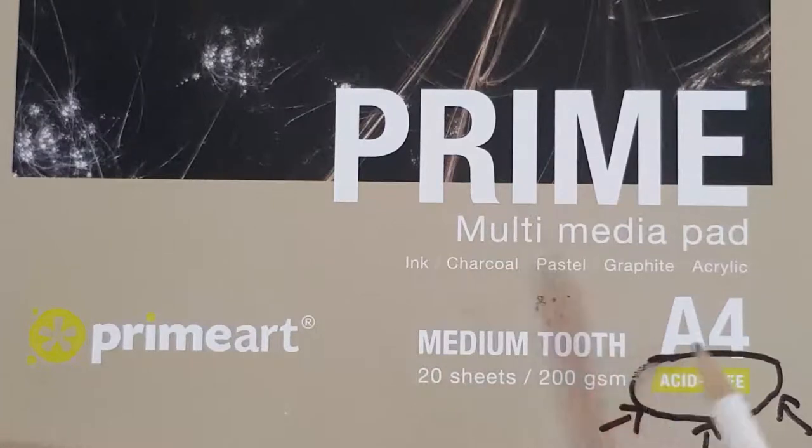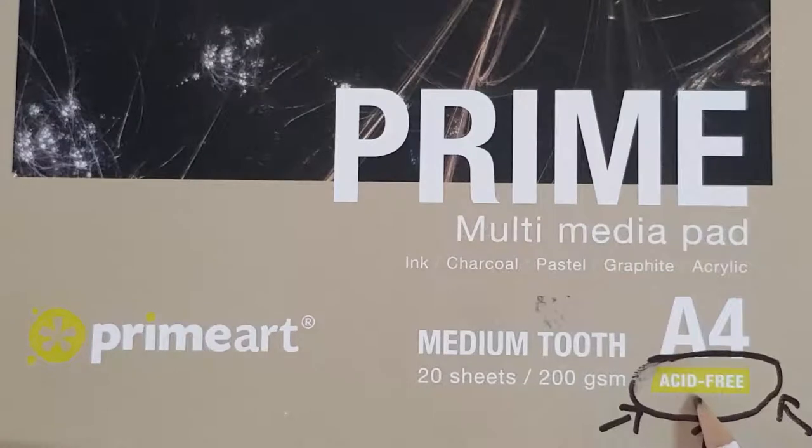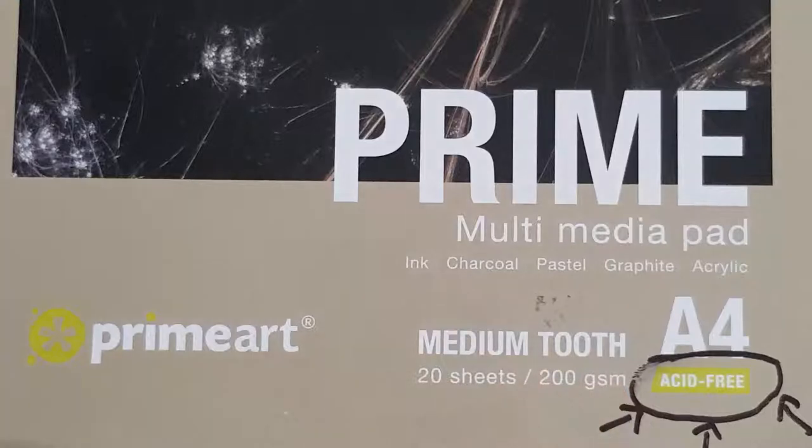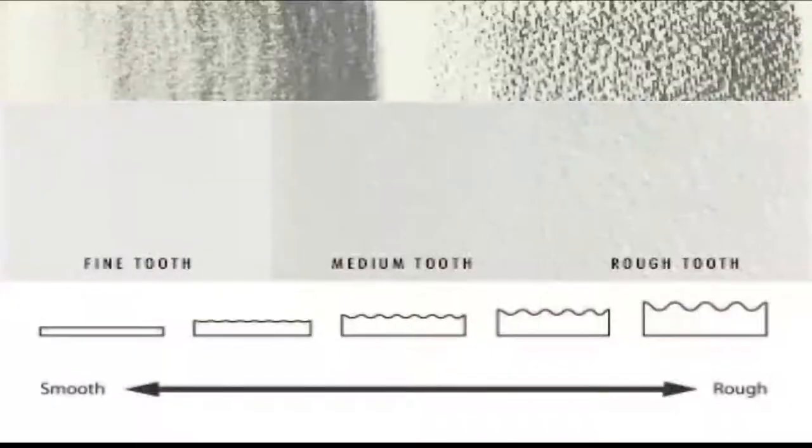Fine tooth or hot press paper is mainly used for ink and pen or markers. Medium tooth or charcoal paper mainly used for charcoal, soft pastel, graphite, and acrylic. Heavy tooth or cold press paper is mainly used for oil pastel and watercolor.